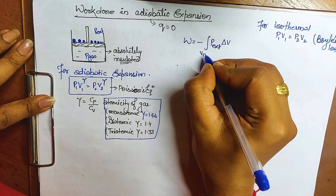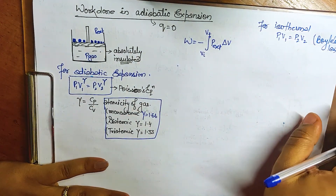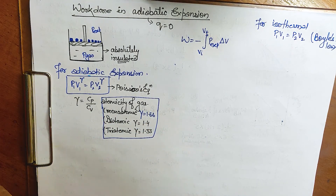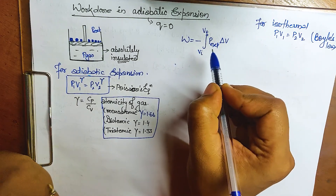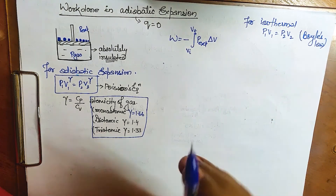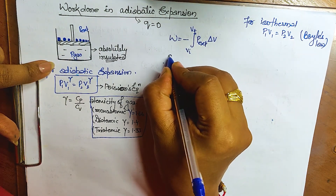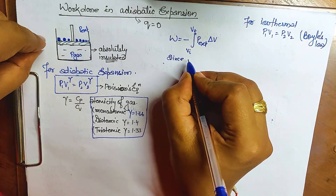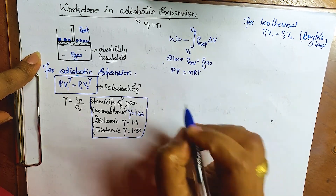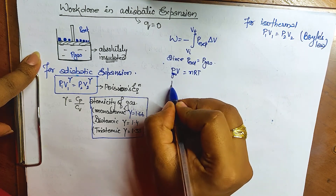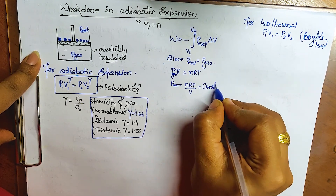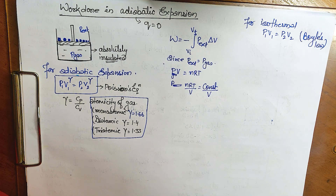We are doing reversible adiabatic expansion. Since dp is very small, we assume p_external equals p_gas. We have pv = nRT, so p_gas = nRT/v. Since nRT is a constant, we can write p = constant/v. But for adiabatic we need to use Poisson's equation, so instead of just v we write v^γ, giving p = constant/v^γ.